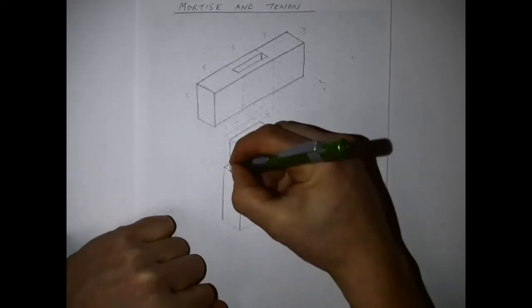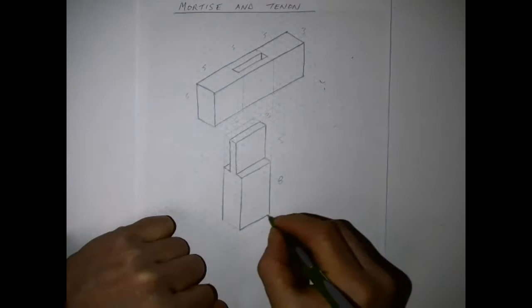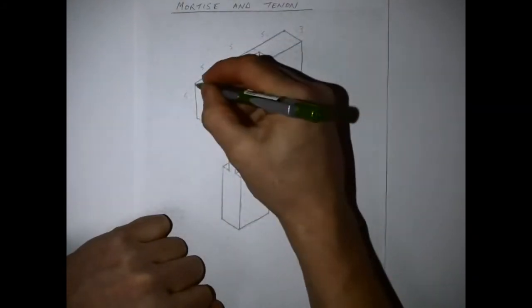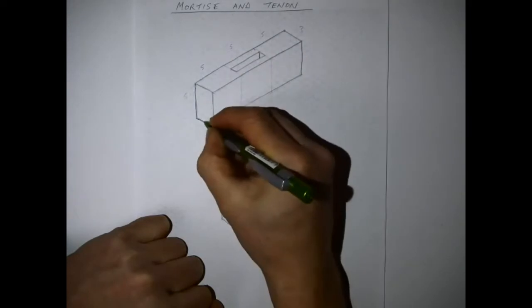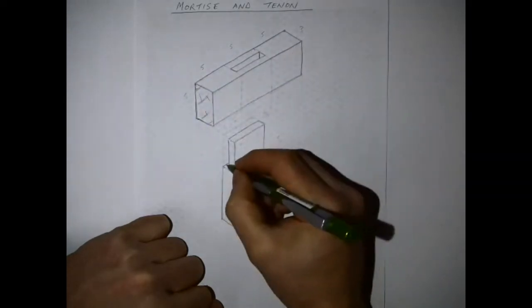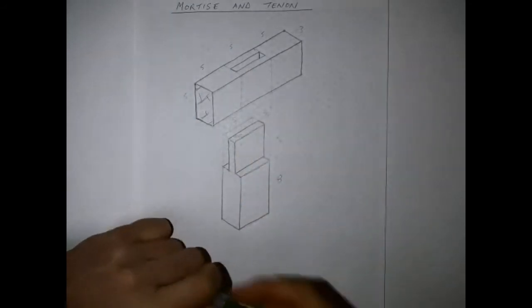So each of these two pieces now in exploded view looks like they've been pulled apart and they can actually be slotted back together again. So we have our mortise at the top and our tenon at the bottom, and I'm going to put in the usual bit of end grain to show that it's wood.